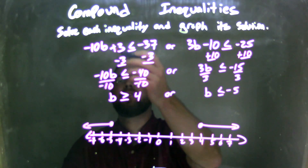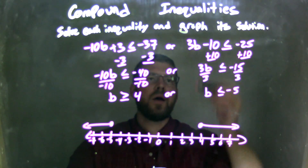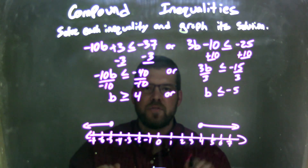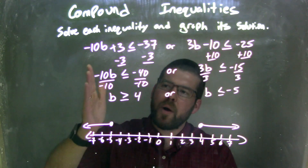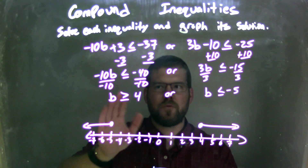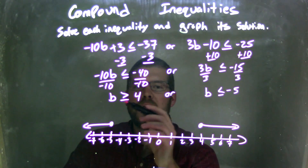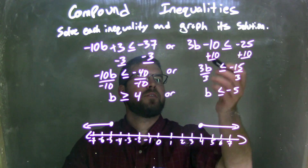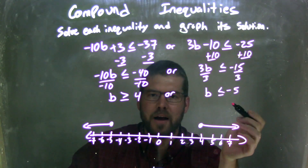Let's recap. We were given negative 10b plus 3 is less than or equal to negative 37, or 3b minus 10 is less than or equal to negative 25. I solved each individually. I subtracted 3 from both sides then divided by negative 10. When dividing by negative 10, the inequality flips from less than or equal to, to greater than or equal to, giving me b is greater than or equal to 4. On the second one, I added 10 to both sides then divided by 3, leaving me with b is less than or equal to negative 5.